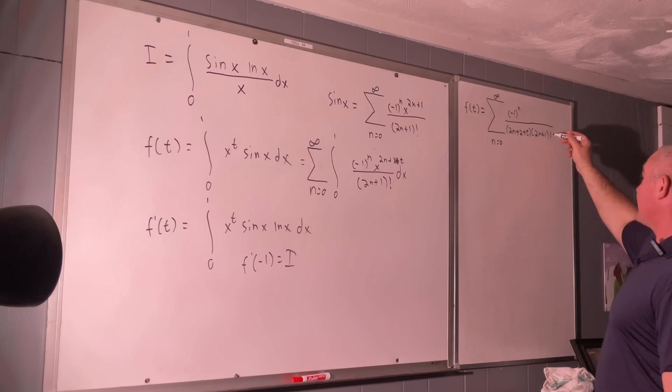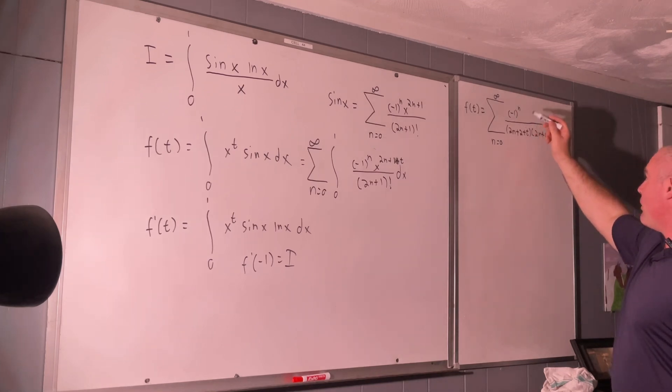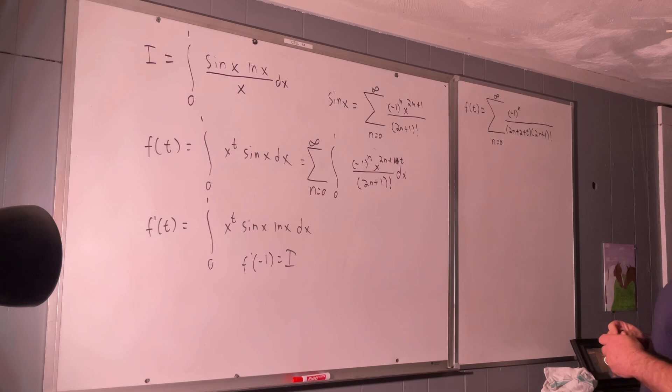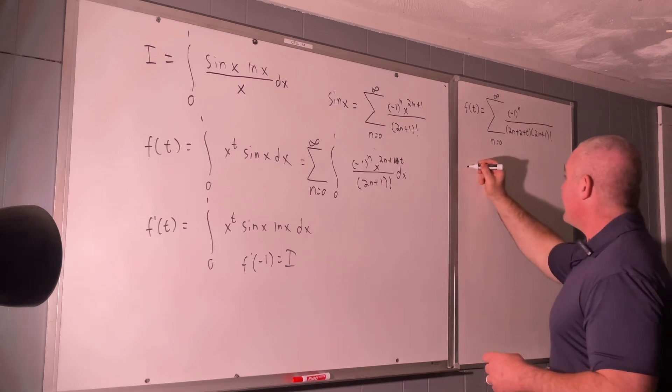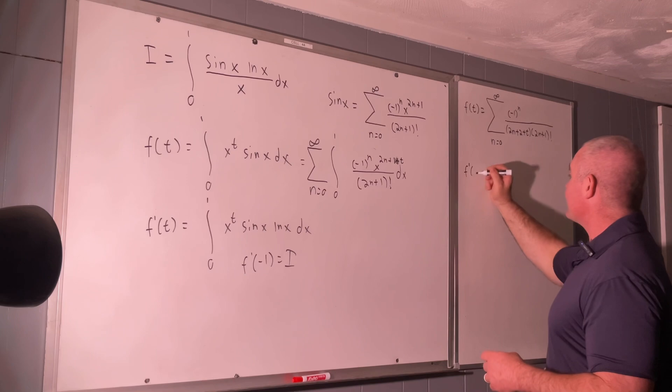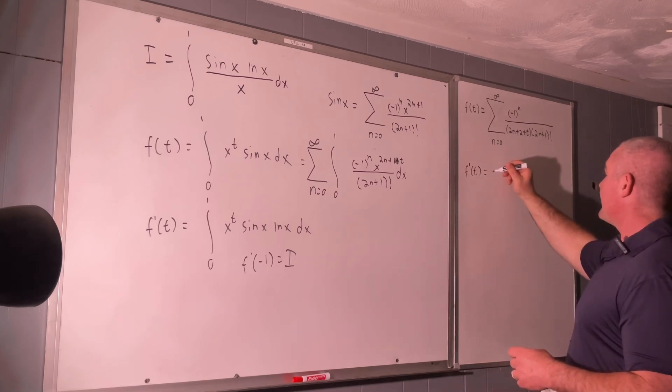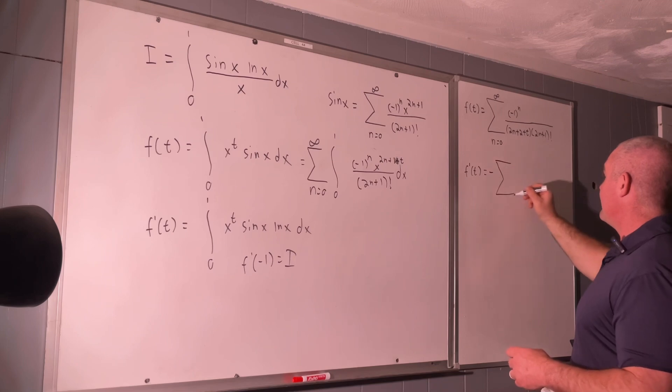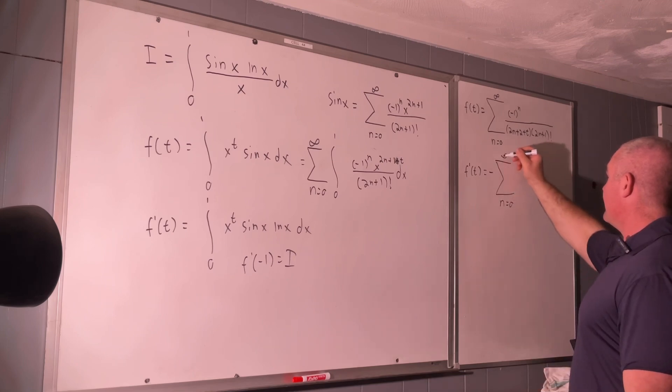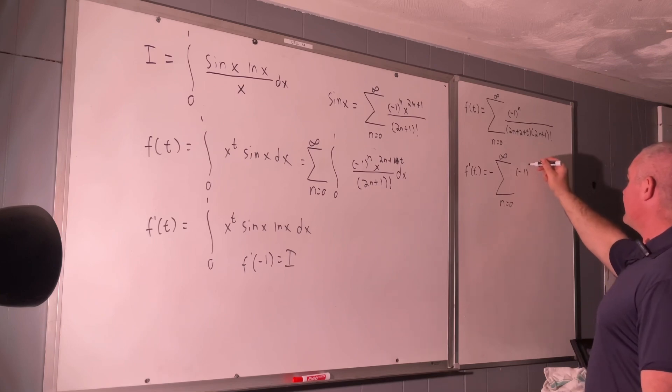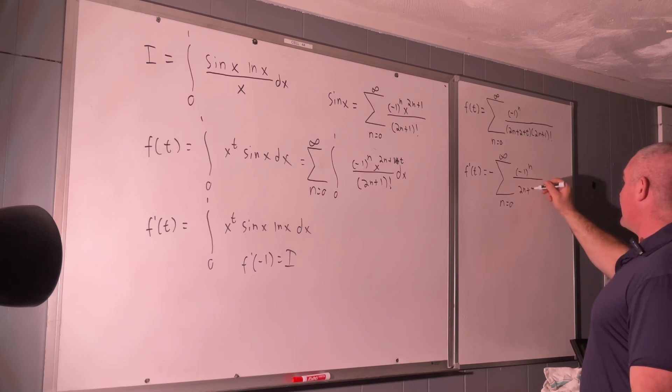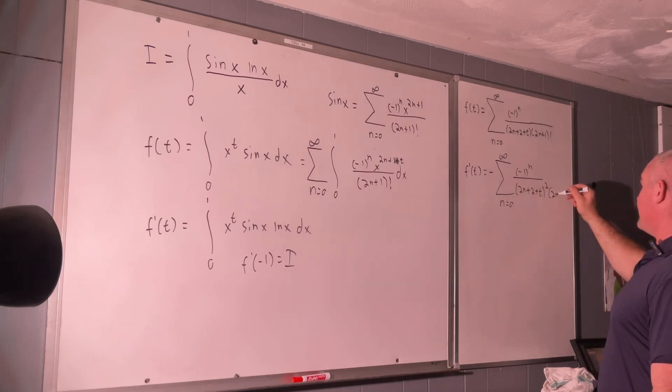And, this is constant with respect to t. This is constant with respect to t. So, we're just going to replace this 1 over 2n plus 2 plus t with its derivative with respect to t. And, that will give us f prime of t. So, that's going to give us negative sum going from 0 to infinity of negative 1 to the n over 2n plus 2 plus t squared times 2n plus 1 factorial. Alright.